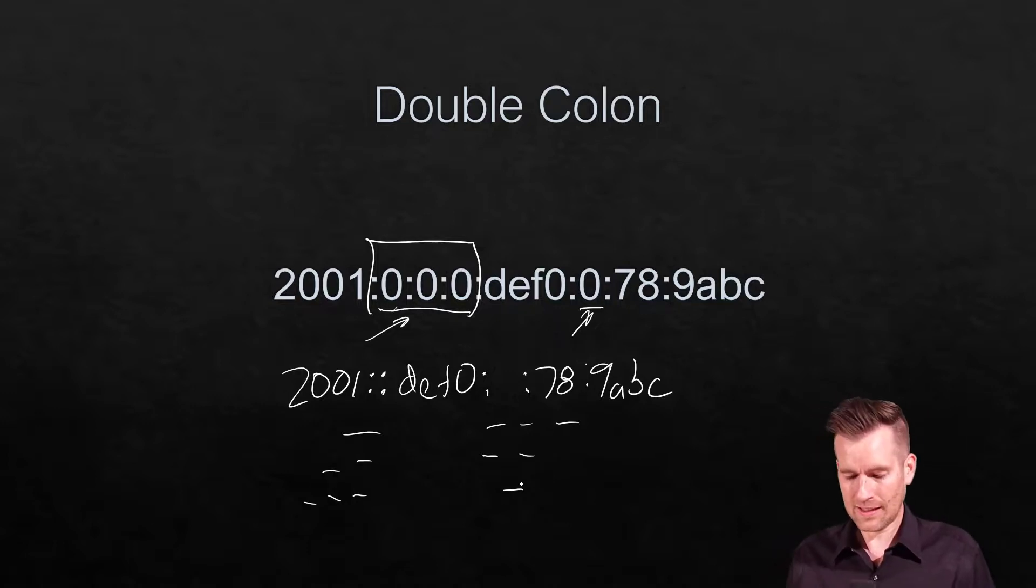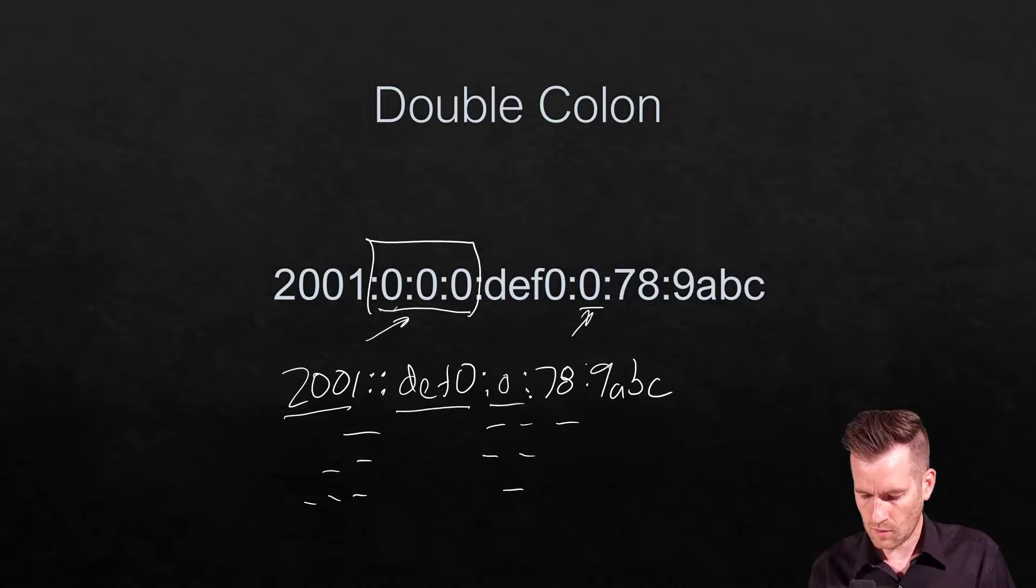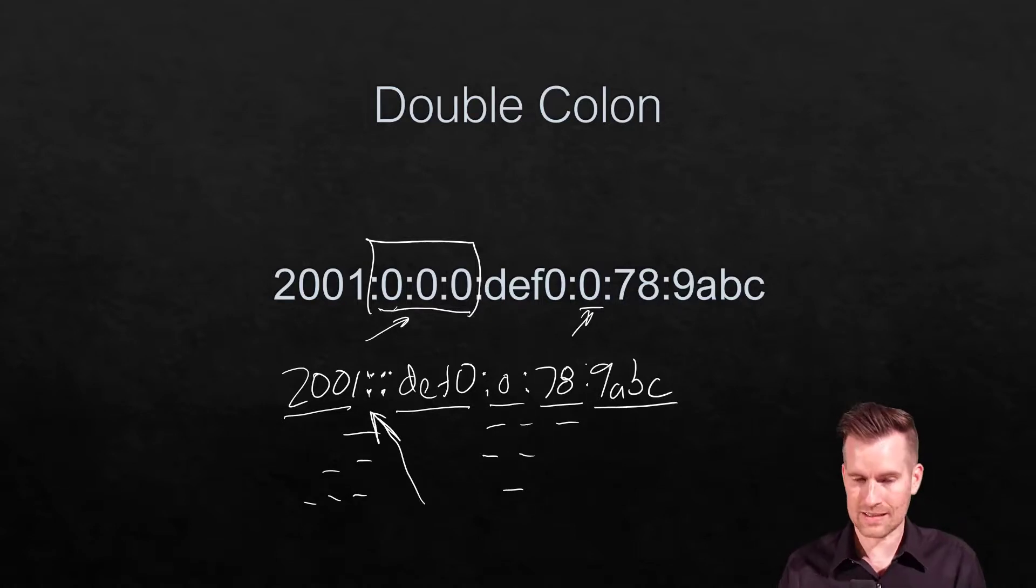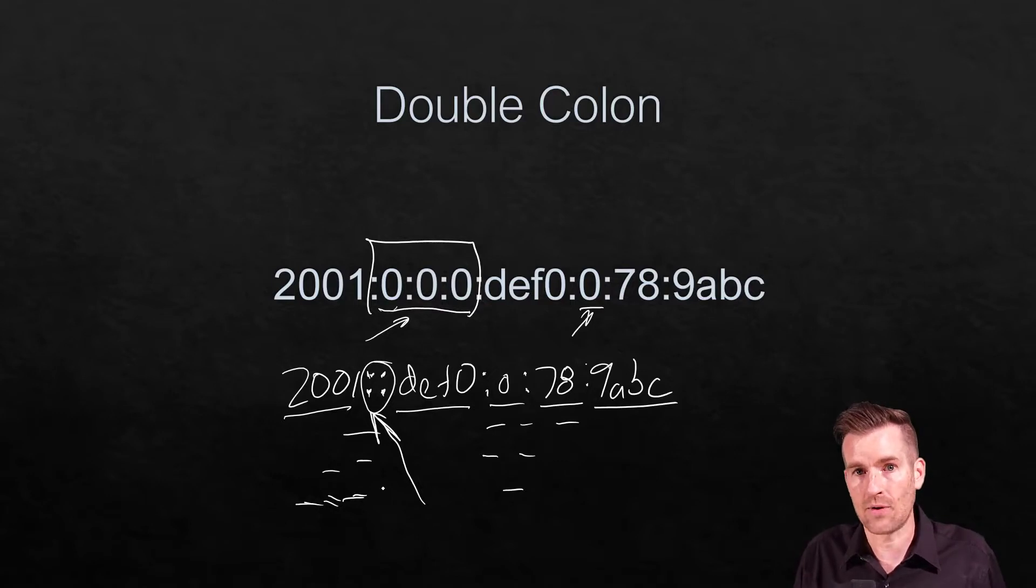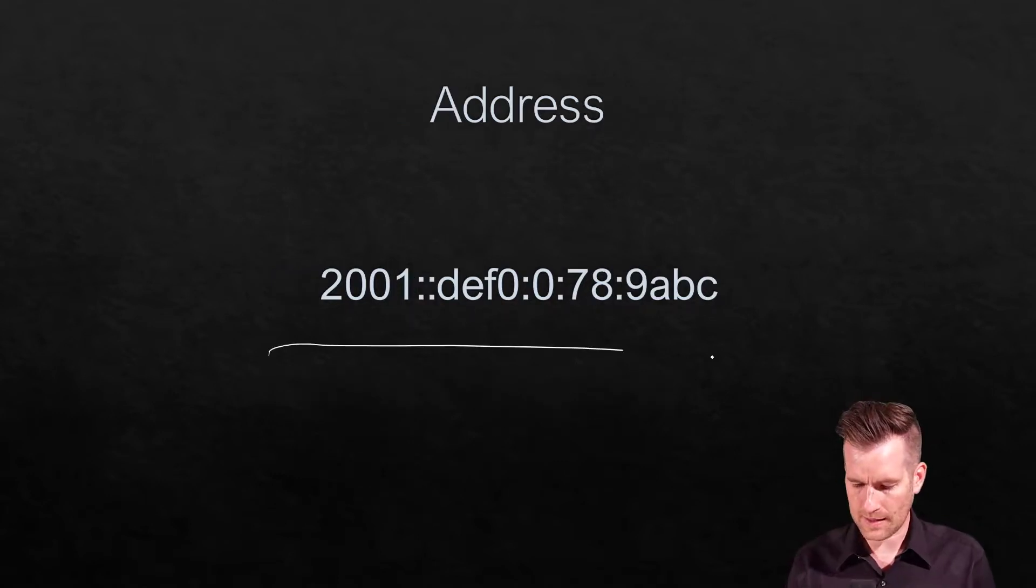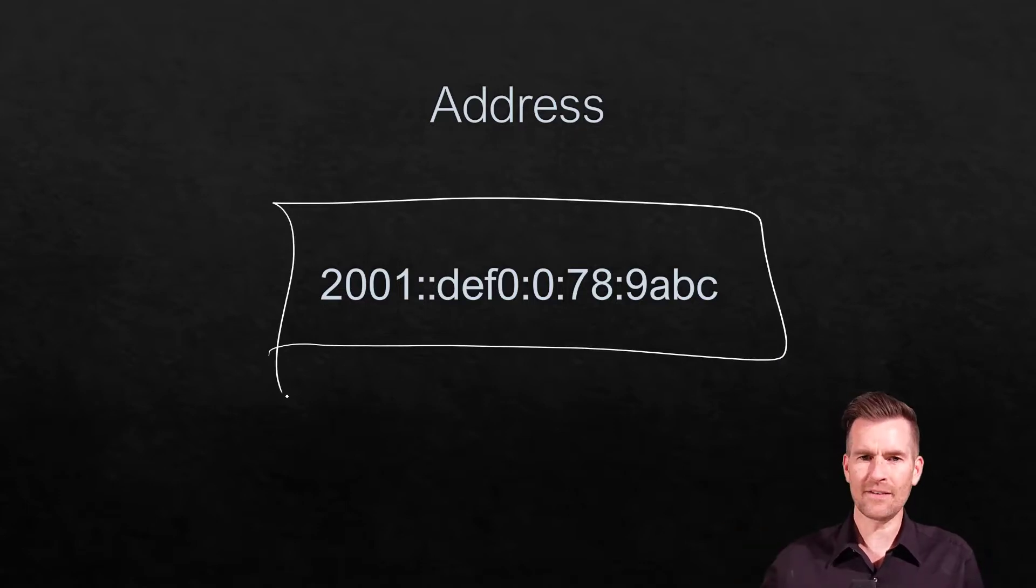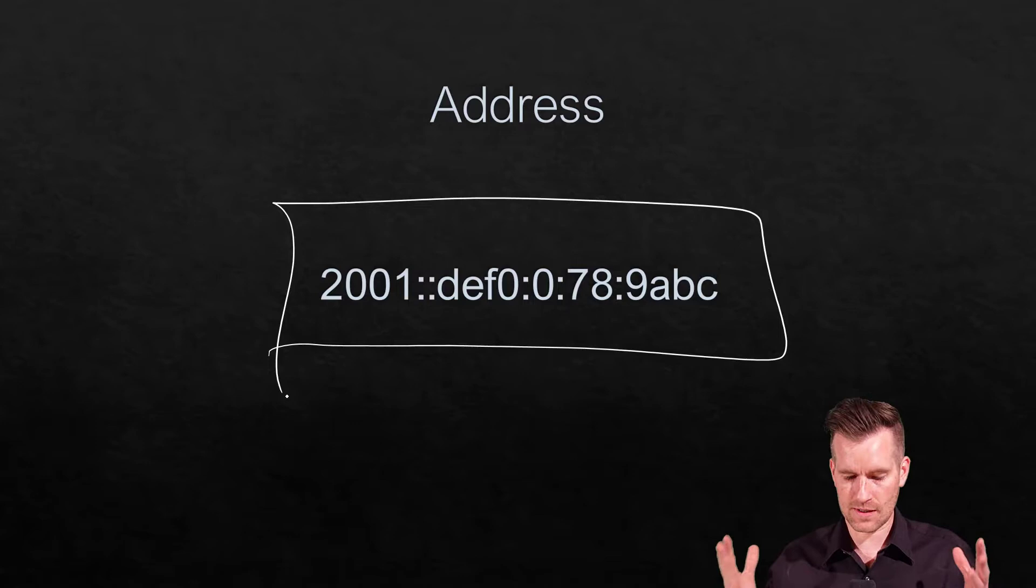The machine knows there must be eight hextets total. With one, two, three, four, five defined, it knows the double colon represents three hextets. That's how to reduce addresses and how the machine adds them back during calculation. This shortened address is quite different from the original with all those zeros.